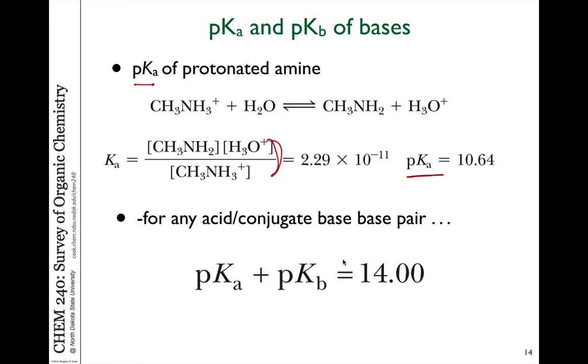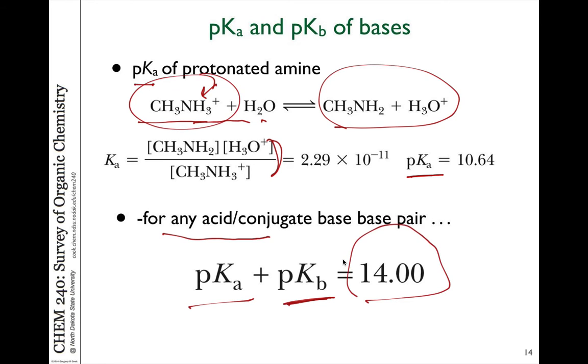Now if you look at the amine which has been protonated, that is the nitrogen has another hydrogen added to it, we can look at the pKa of those molecules as it gives up a proton to something like water. For any acid and conjugate base pair, we can describe this in terms of the basicity constant, or the pKb. The pKb plus the pKa for the ammonium should equal 14.